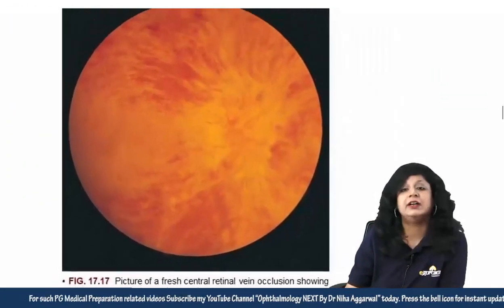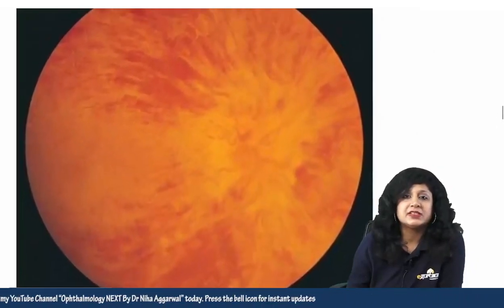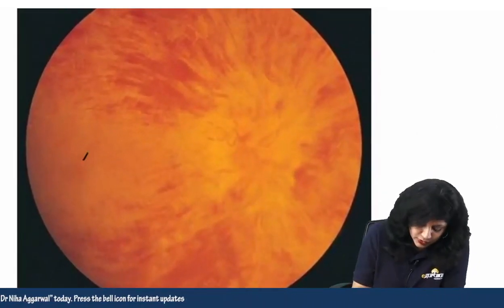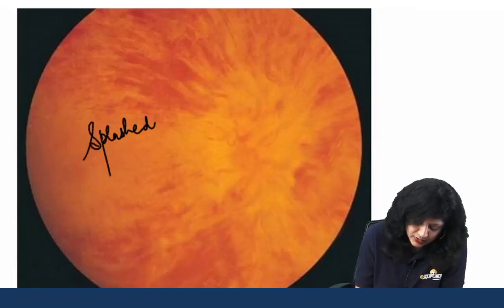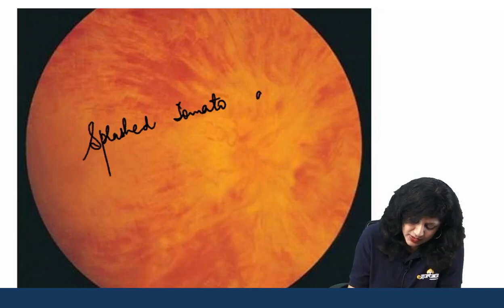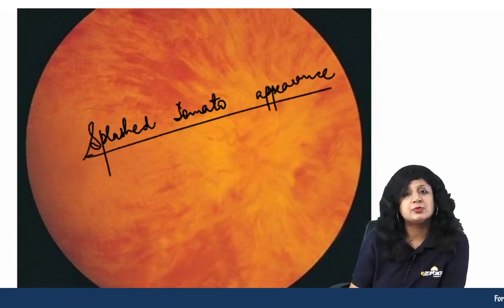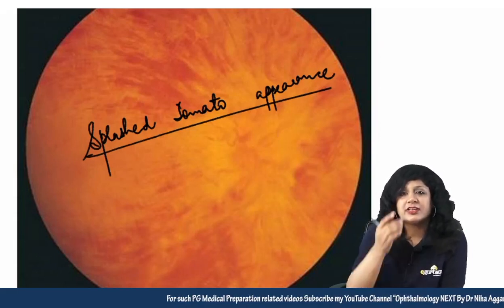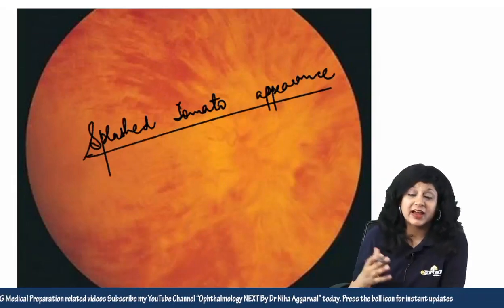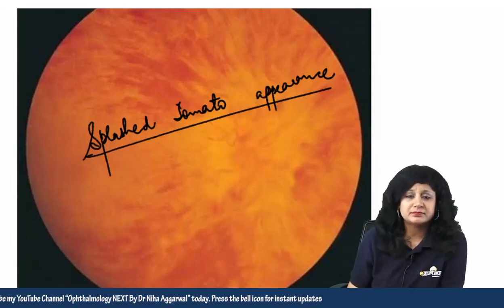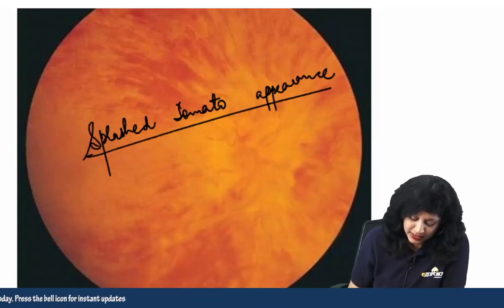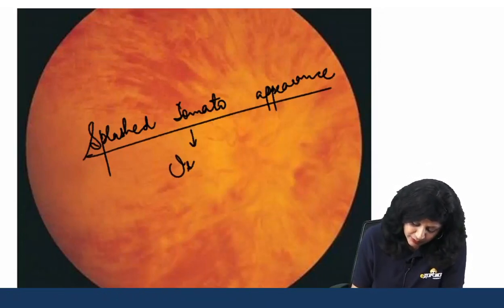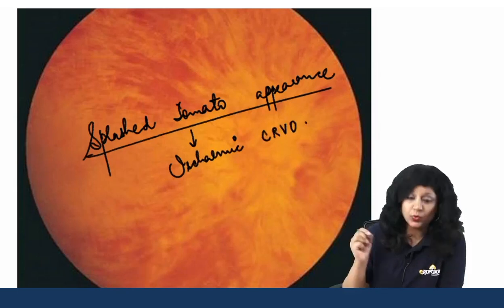This is the typical splashed tomato appearance — you can see a lot of hemorrhages. This splashed tomato appearance is found in cases of ischemic CRVO.